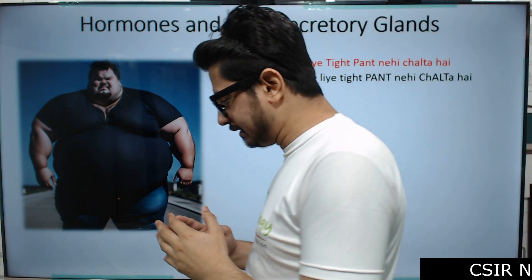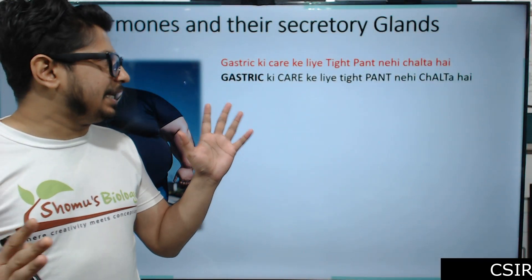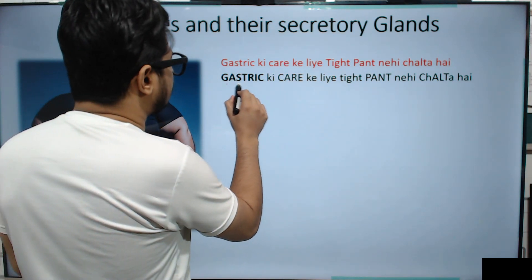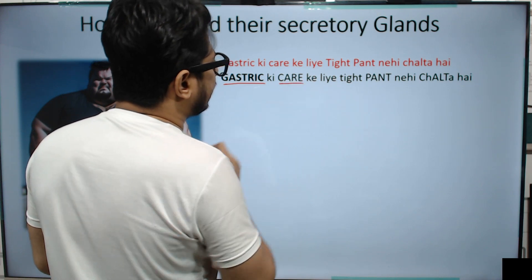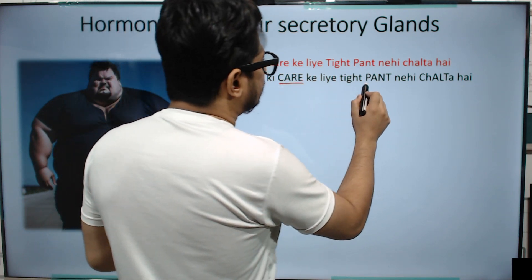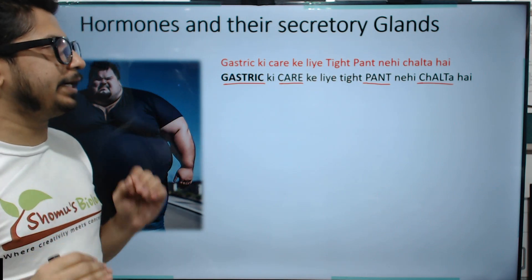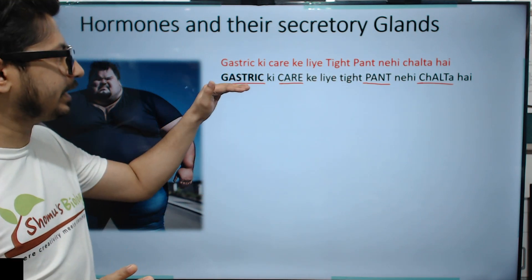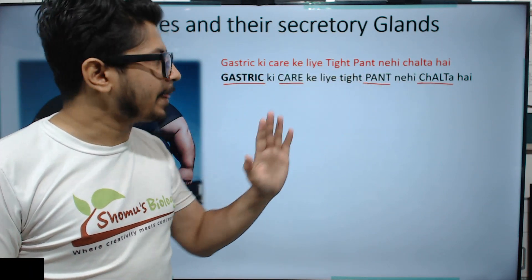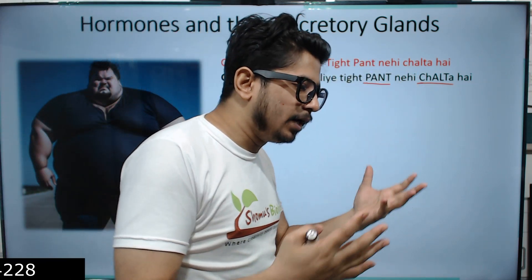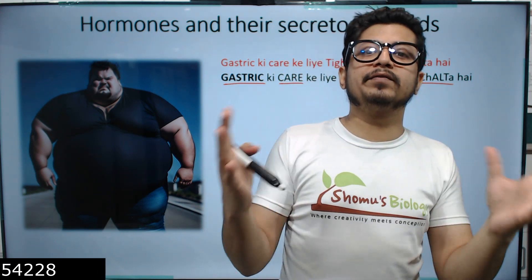We'll rearrange this sentence. Gastric ki care ke liye tight pant. Here we have several sections: gastric, care, pant, and chalta. There are four different sections. Why do we have four different sections? Because these four different sections will accompany the hormones produced by four different types of glands, four different locations, and four different types of hormones.